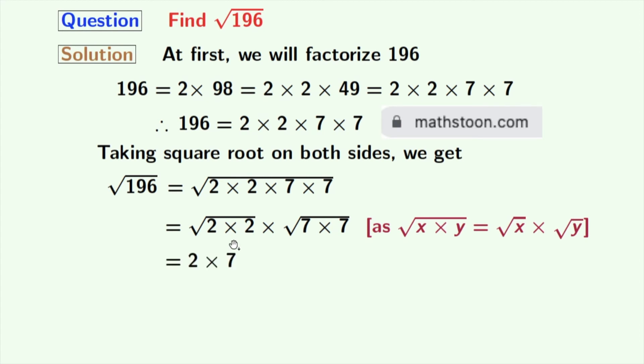From the first square root we get 2, and from the second square root we get 7, as we know that √(a × a) = a. In the first square root we have a = 2, and in the second square root we have a = 7. Now after multiplication we get 14, and this is our final answer.